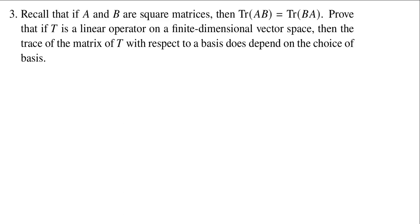Welcome back everybody. This is our video solution to Problem 3 from Quiz 12, Fall 2023, Math 307, Linear Algebra at Cal State Fullerton. In this problem, we're first reminded that if we have square matrices A and B, then the trace of the product doesn't depend on the order in which we take that product. Now we're asked to prove that if we have a linear operator T on a finite dimensional vector space, then the trace of the matrix of T with respect to a basis doesn't depend on the choice of basis.